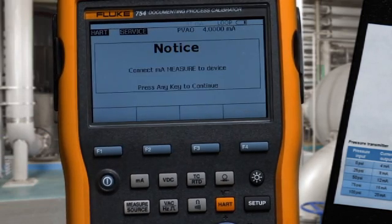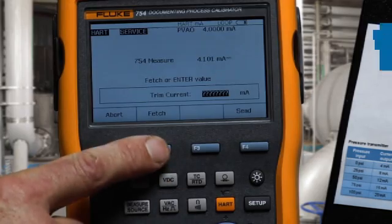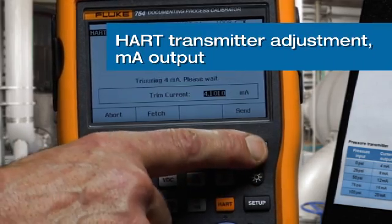First, we'll adjust the output of the transmitter. We'll fetch the 4 milliamp value and press send to adjust.